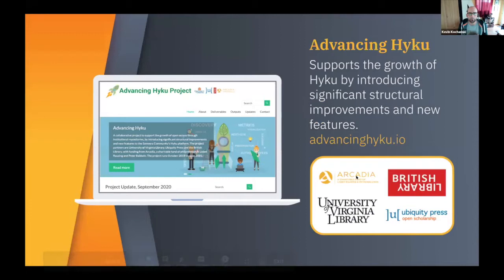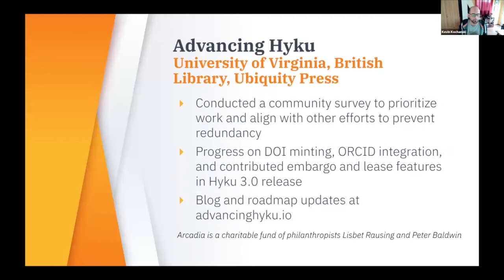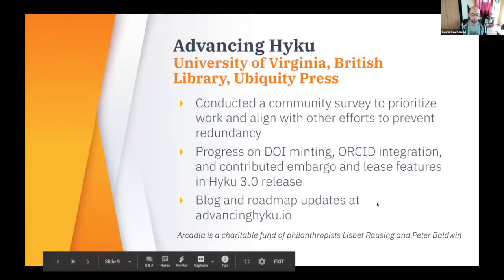The big news is that there are a lot of grant projects going on in Haiku and in the pipeline. Advancing Haiku is pretty big in the community — Arcadia Charitable Fund, Burden Library, University of Virginia, and Ubiquity Press. They've recently conducted a community survey to make sure that what they're doing is in alignment with other major Haiku projects. Some of the features they've worked on include DOI minting, ORCID integration, and they contributed the Embargo and Lease auto-release feature to Haiku 3.0. You can follow their activity at advancinghaiku.io.